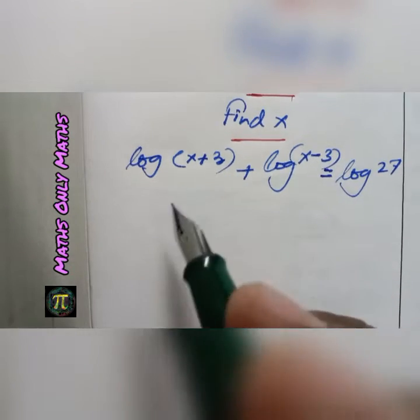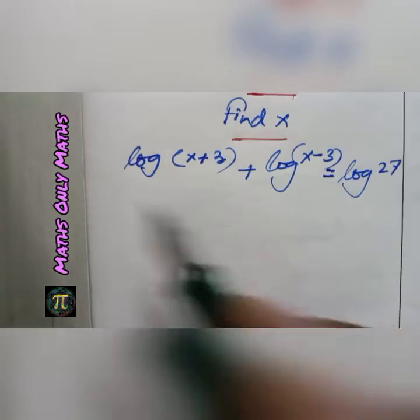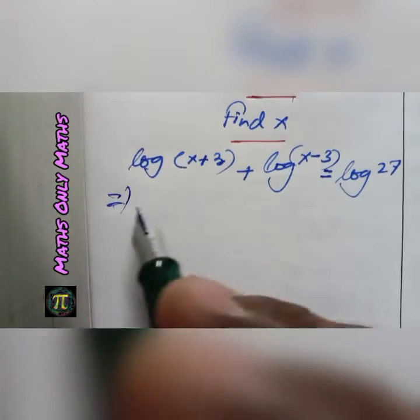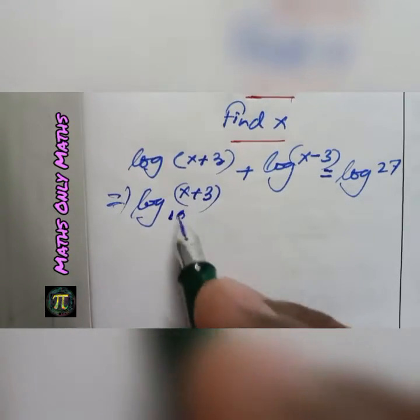Find the value of x when log(x+3) plus log(x-3) equals log 27. When no base is given, we take 10 as base.